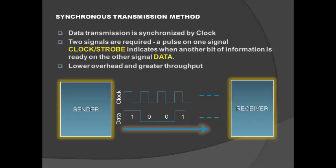In synchronous transmission, data transmission is synchronized by a clock. We require two signals: one is the clock stroke signal and the other is the data signal. The pulse on the clock stroke indicates when the data is to be taken or when it is ready. The advantage of synchronous transmission is lower overhead and greater throughput, since we have a separate signal for synchronization.